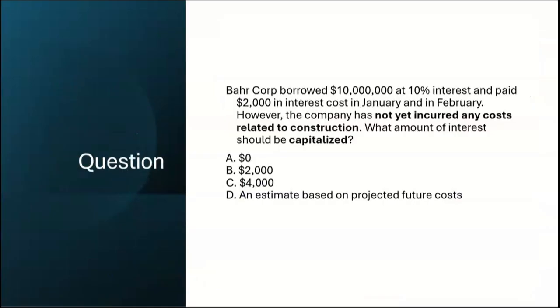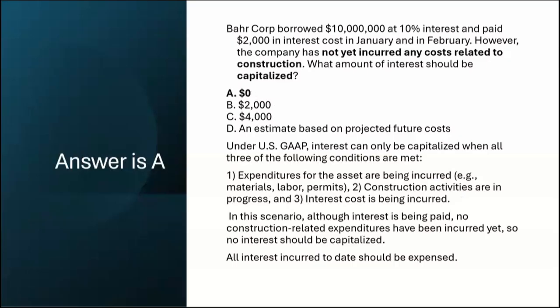That's when you know construction has begun and when you can start capitalizing interest. Before that, interest has to be expensed, and after construction you return to expensing interest as well. Bar Corp borrowed $10 million at 10% interest and paid $2,000 in interest cost in January and in February. However, the company has not yet incurred any costs related to construction. What amount of interest should be capitalized — is it zero, $2,000, $4,000, or an estimate based on projected future costs?